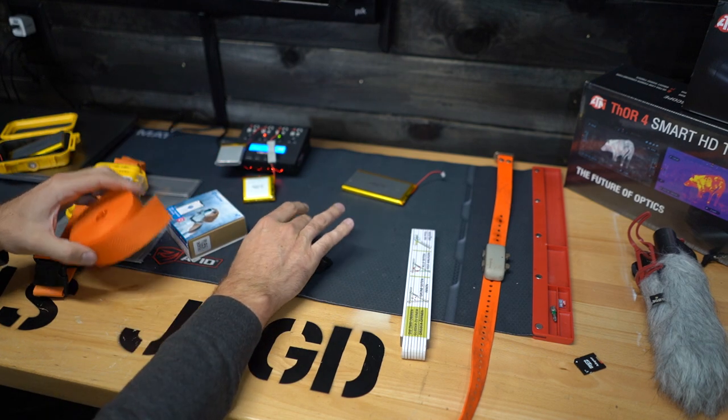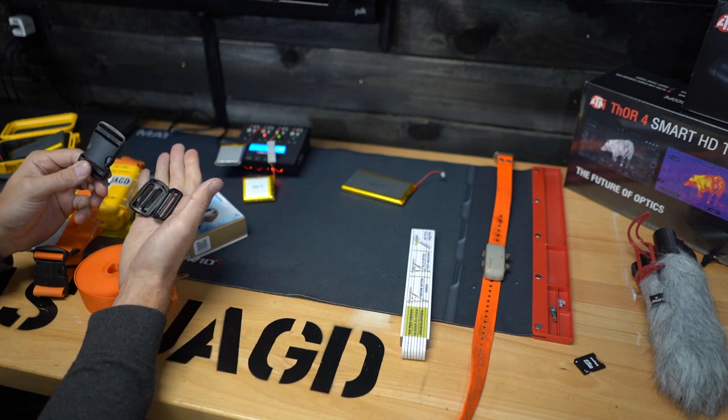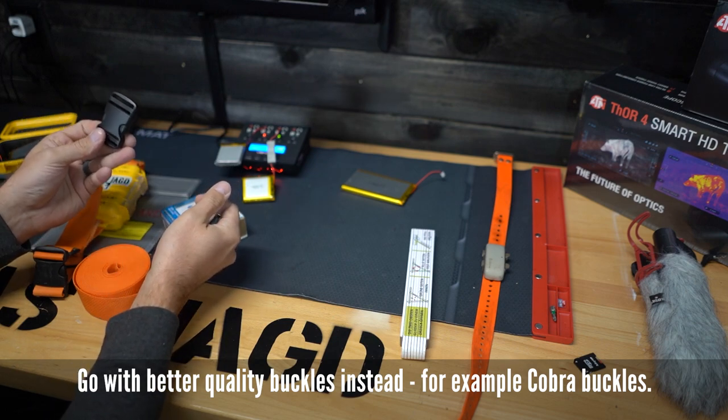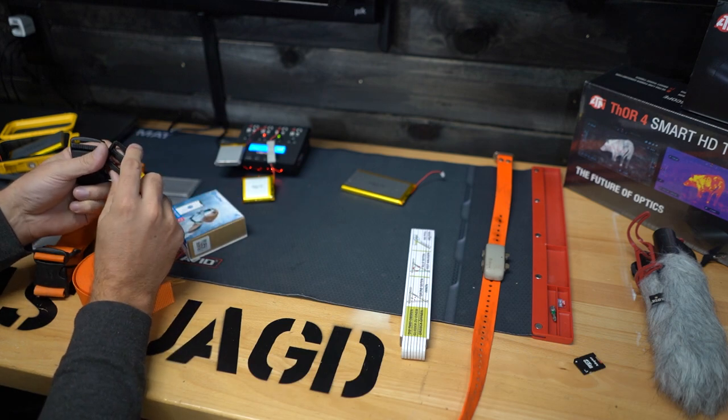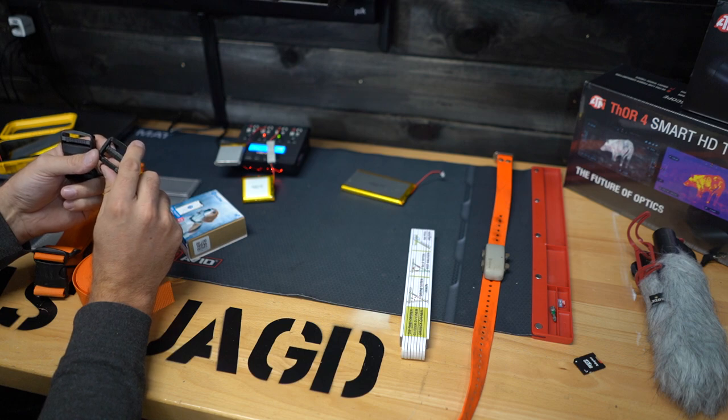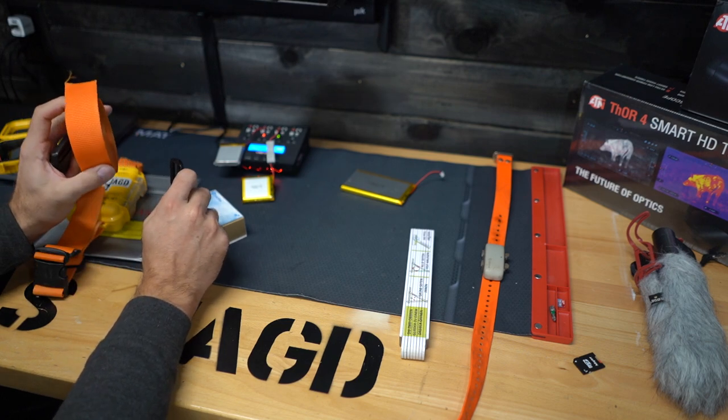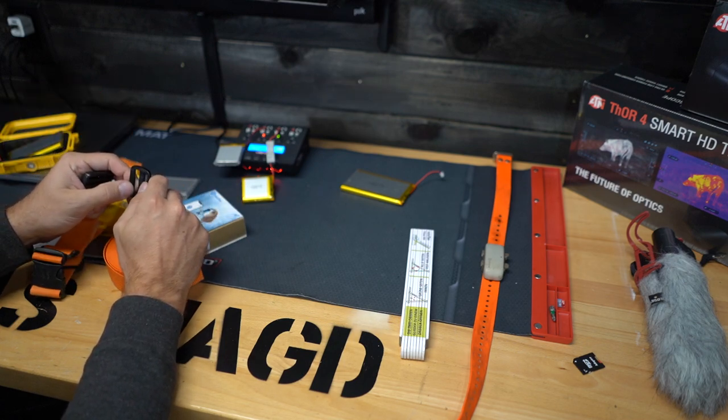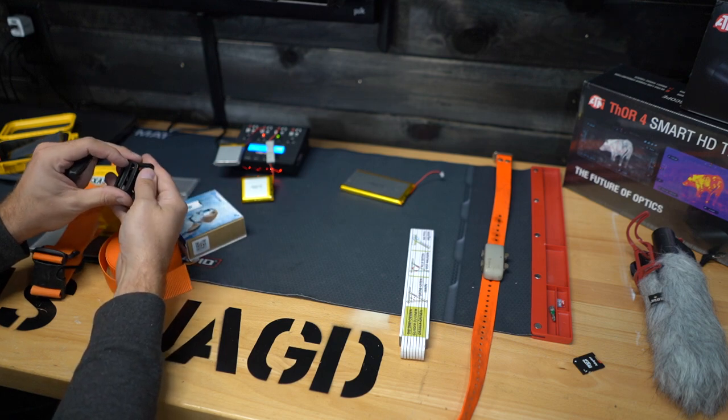So once you have the strap, you obviously need some sort of buckle and these triglides to adjust size and actually put this thing around the hog's neck. Those are pretty straightforward. There are some triglides which are better quality than others. They're supposed to be better in terms of actually keeping this strap at the position where it's supposed to be, so it shouldn't slip as much and therefore widen the collar. I opted for the slightly more expensive triglides versus just the cheap ones.